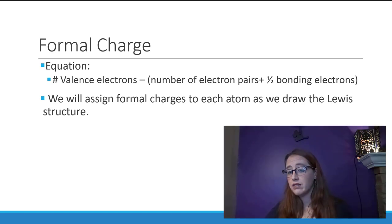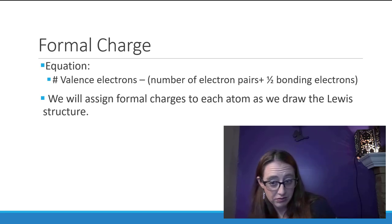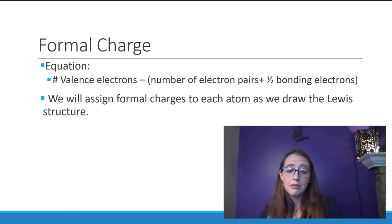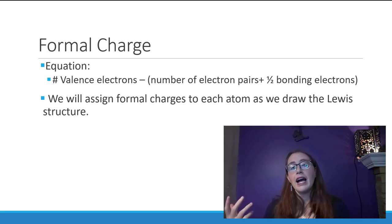It then gets one electron from each bond. So if it has three lone pairs and one bond, that would equal three times two—six from the lone pairs—plus one from the bond equals seven electrons. This is going to make more sense as we do lots and lots of examples along the way.